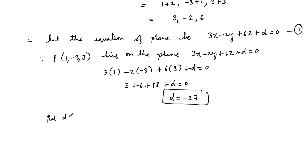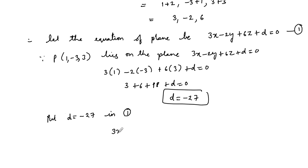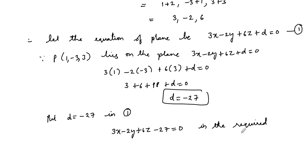Therefore d = -27. Substituting d = -27 into the plane equation, we get 3x - 2y + 6z - 27 = 0, which is the required equation of the plane.